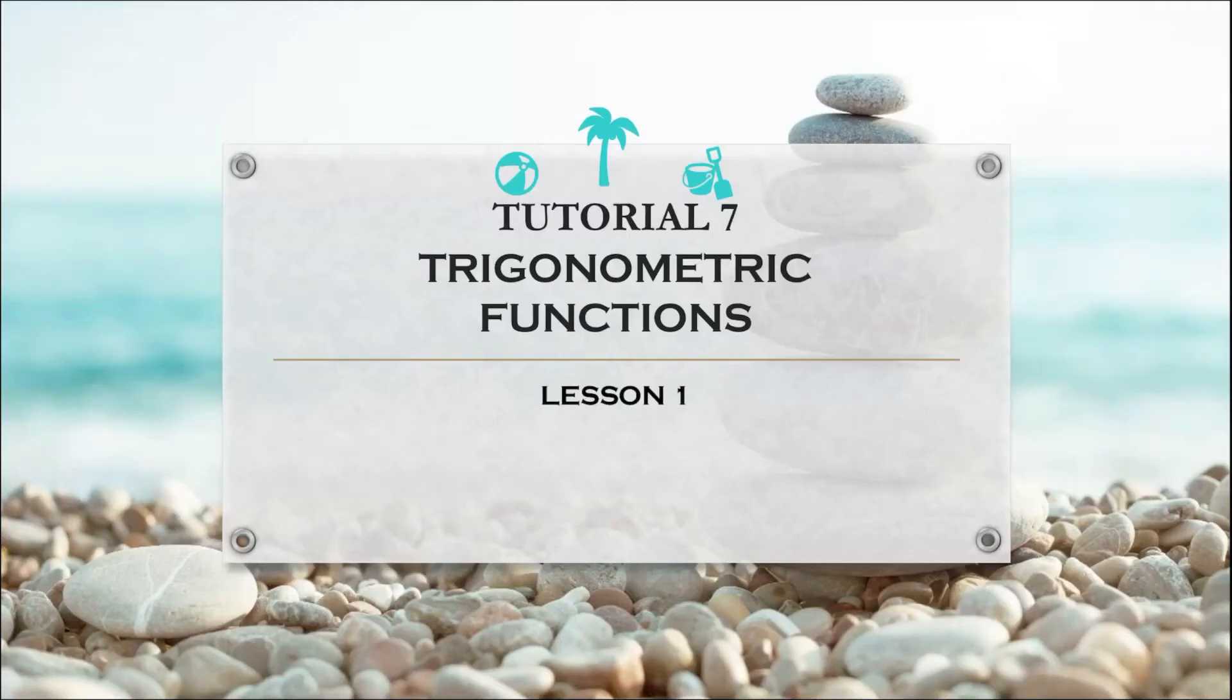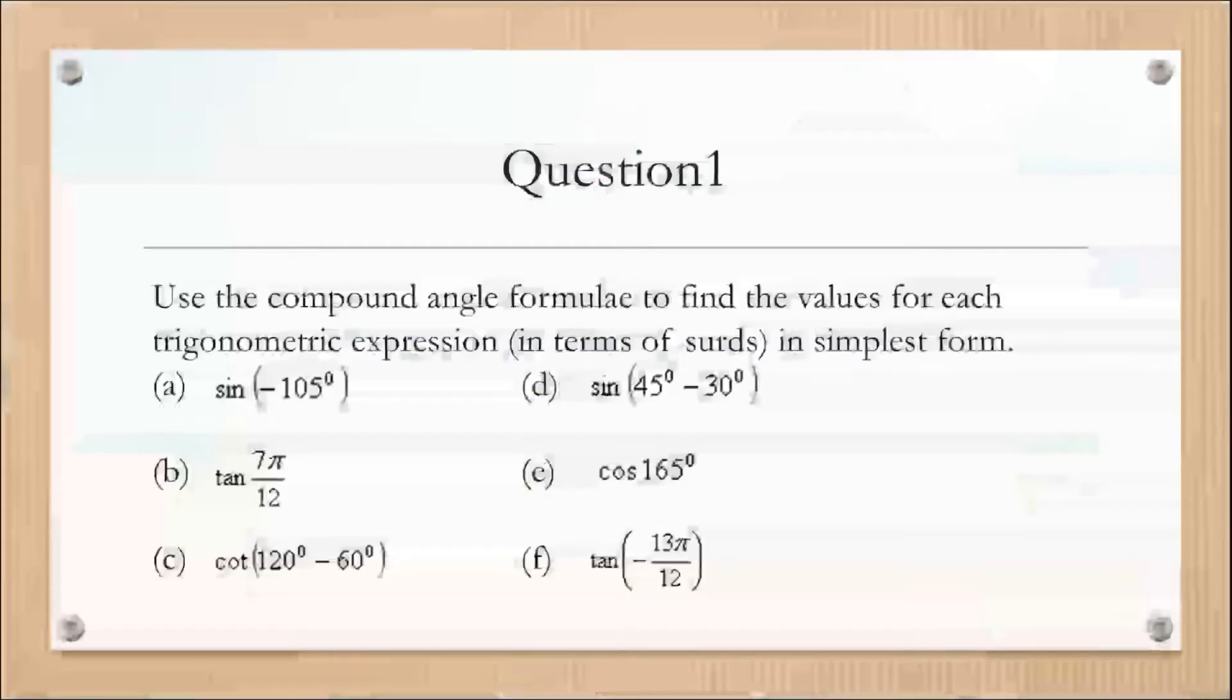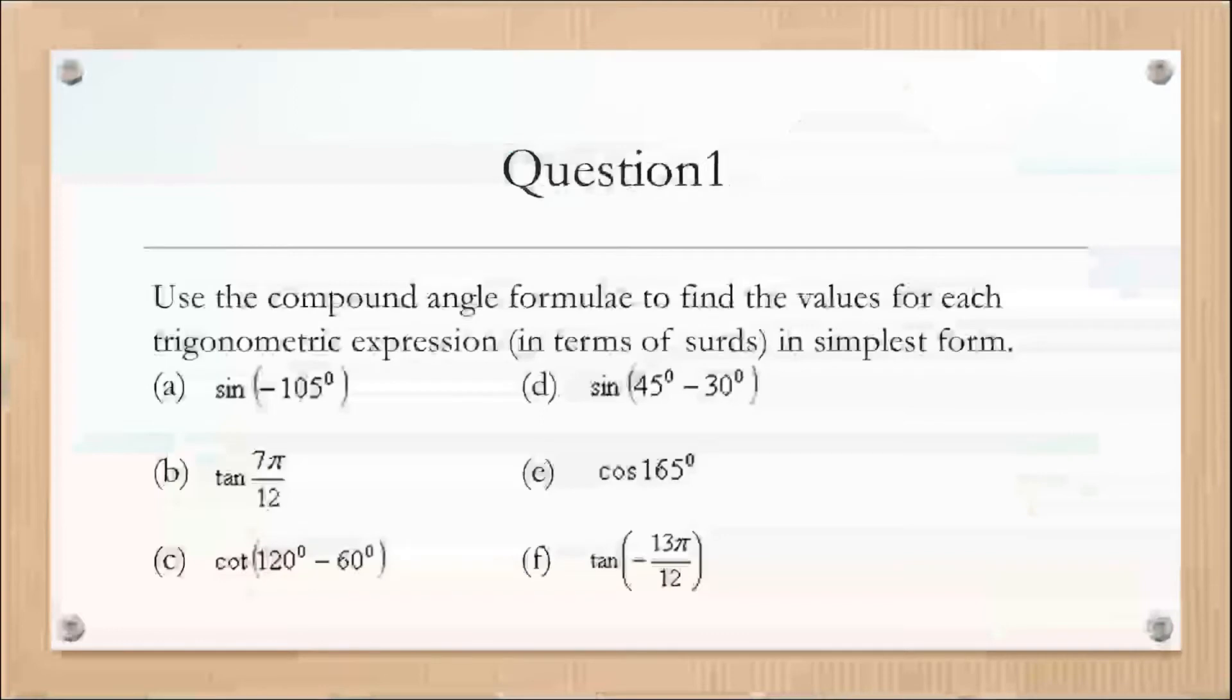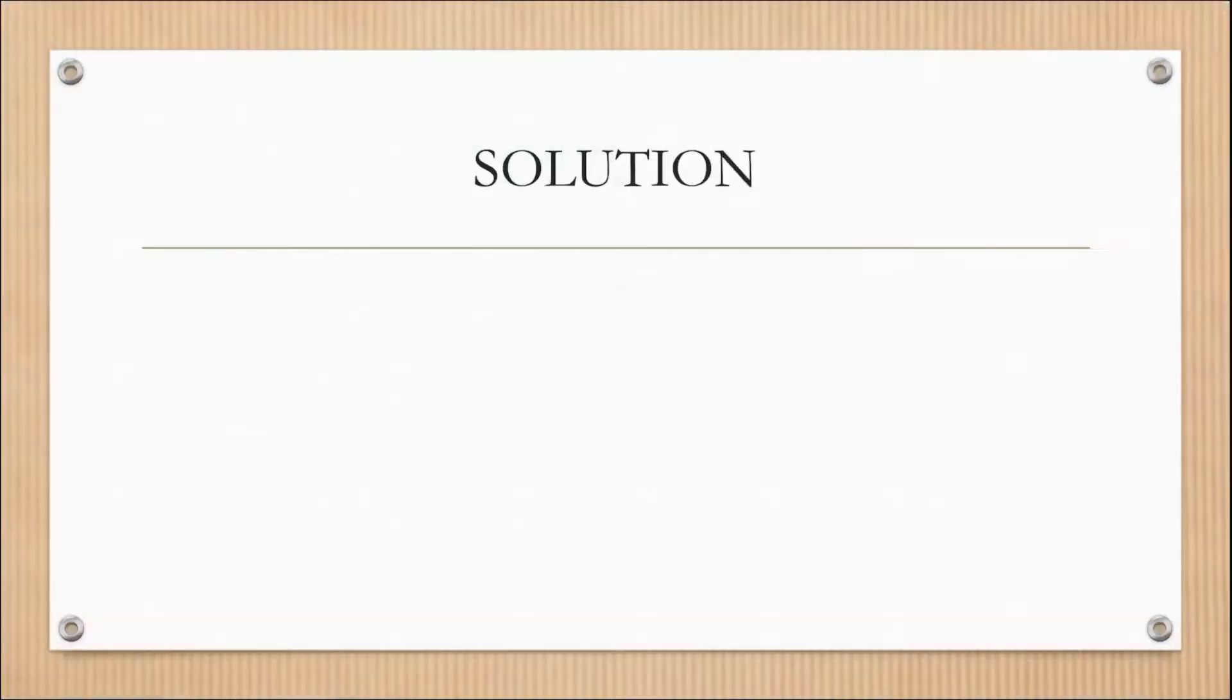Assalamualaikum and hi, welcome to lesson one of tutorial seven on trigonometric functions. In this video we are going to discuss question one: use the compound angle formula to find the values for each trigonometric expression in terms of surds in simplest form. I will discuss question A, B, and C.